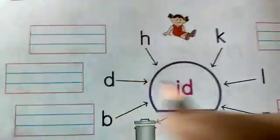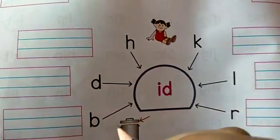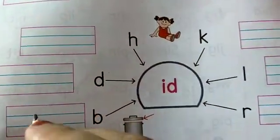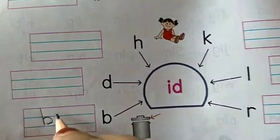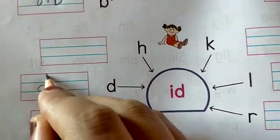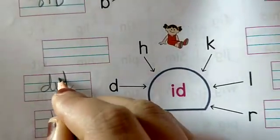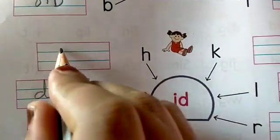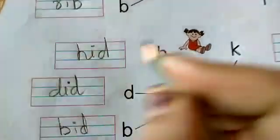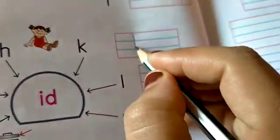Next is, I d. With I d, we are going to make, how many words? One, two, three, four, five, six. First, B I d, bid. Next is, D I d, did. Next is, H I d, hide. Next is, K I d, kid.